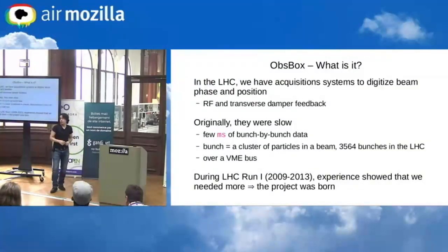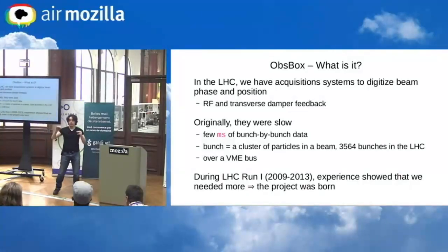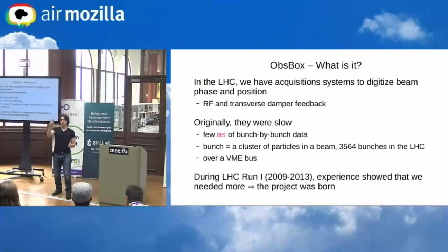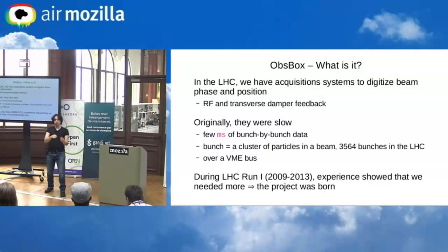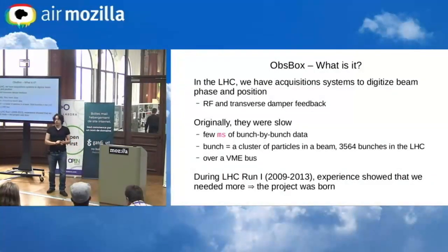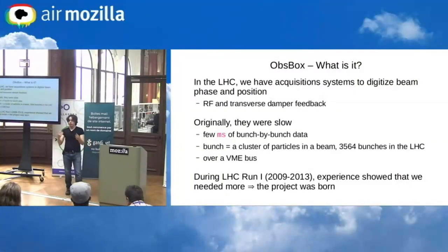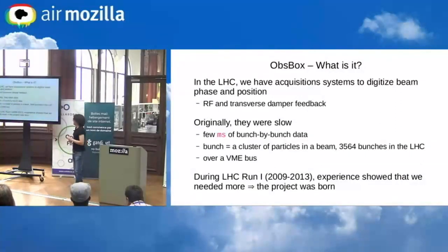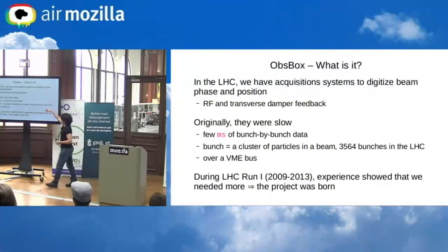I worked on ISOLDE at one point, where we had to generate a field with a voltage, and the voltage-to-field curve turned out to be not just non-linear but had hysteresis — a kind of state memory — making it impossible to invert simply. This is typical: everything in the accelerators is so non-linear and complex that you can't make simple control systems. Originally in the LHC, from the RF cavity you could only read a few milliseconds of bunch-by-bunch data over a VME bus, which was insufficient for physicists.